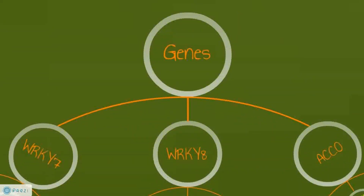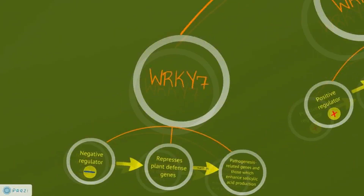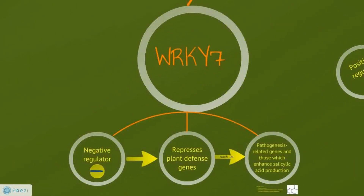In our experiment, we analyzed the expression levels of three defense-related genes, namely WRKY-7, WRKY-8, and ACC oxidase. WRKY-7 is a negative regulator which indirectly represses plant defense genes, such as pathogenesis-related genes and those which enhance salicylic acid production.